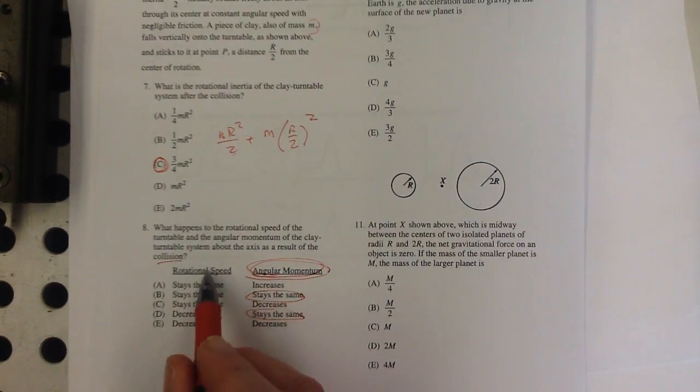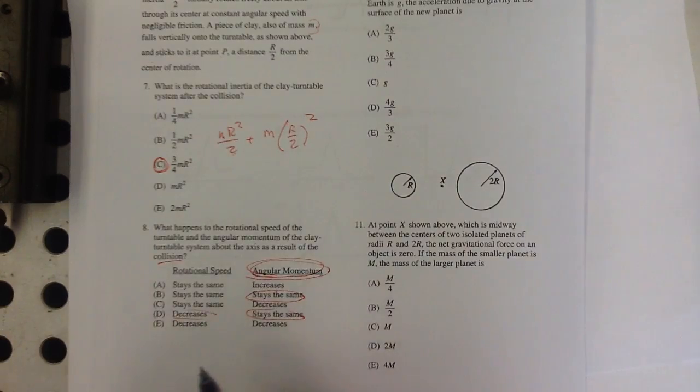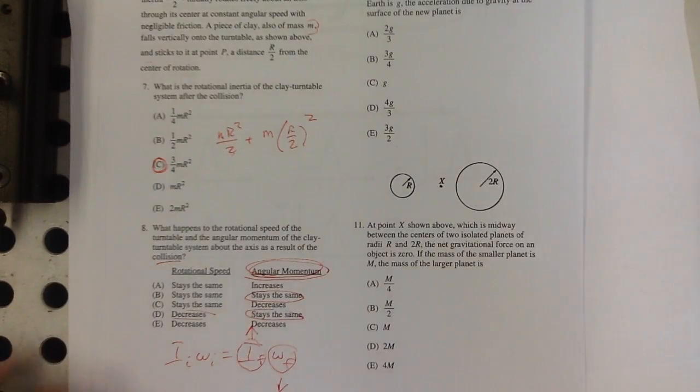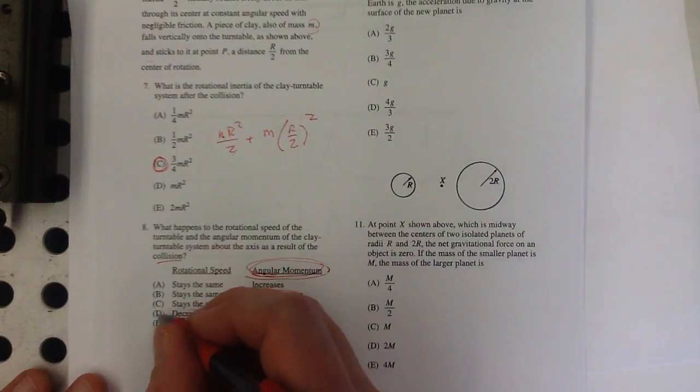And the rotational speed is going to decrease. Right? So the I omega before is going to equal to the I omega after. This went up, so this must go down. So the answer is D.